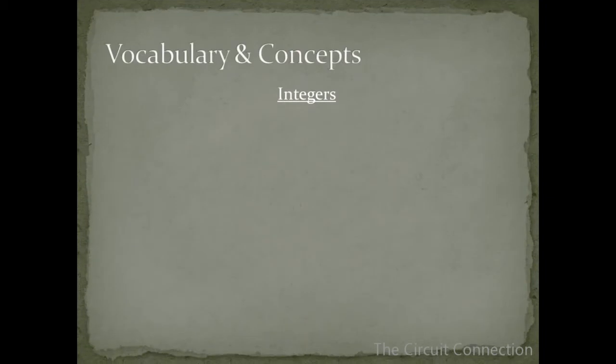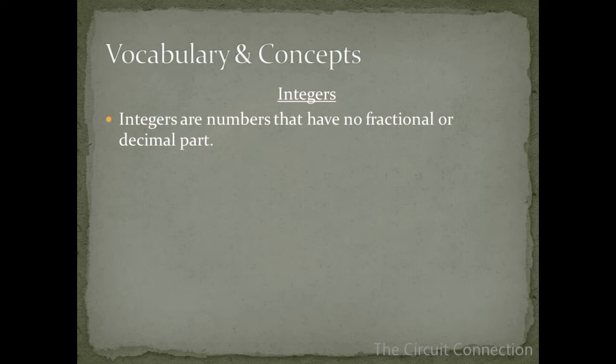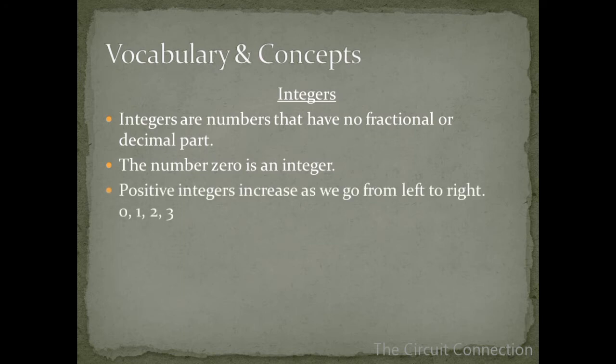Integers. What are integers? Integers are numbers that have no fractional or decimal part. The number 0 is an integer. Positive integers increase as we go from left to right such as 0, 1, 2, and 3.